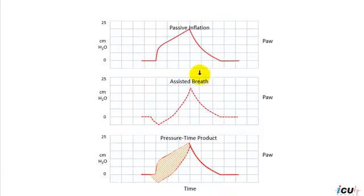In passive inflation breath, the waveform has a defined pattern based on the type of flow. In this case here it is a constant flow, thus the pressure rises steadily to the peak inspiratory pressure.